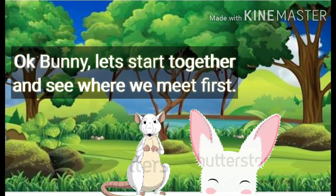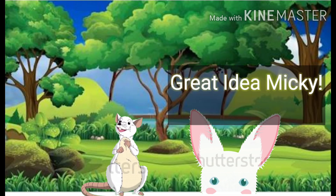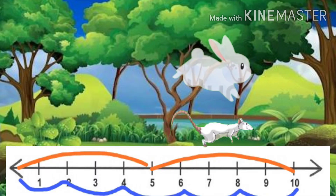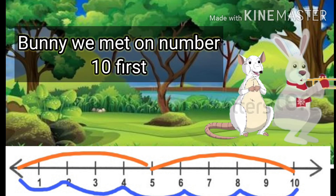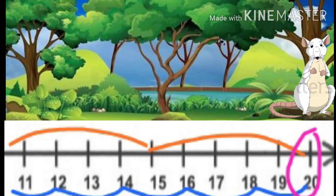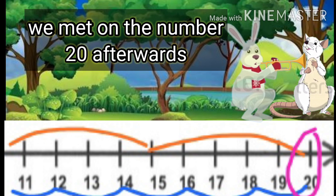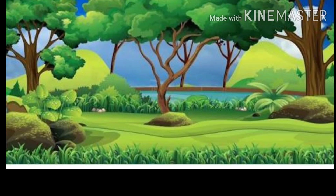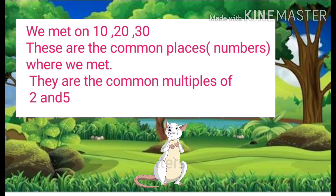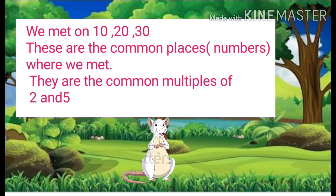Okay Bunny, let's start together and see where we meet first. Great idea, Mickey! Now Mickey and Bunny were ready to jump together to see where they first meet. It's too much fun jumping together! We met on the number ten first, and then we met on the number twenty afterwards. We met on ten, twenty, thirty — these are the common places where we met.